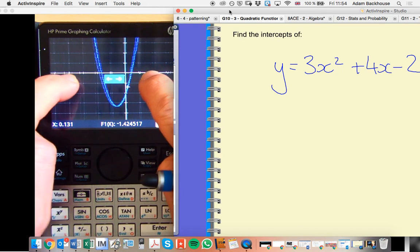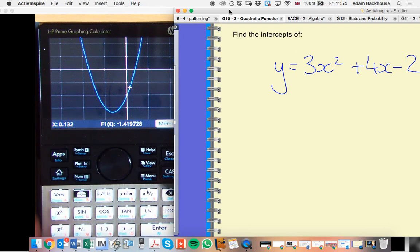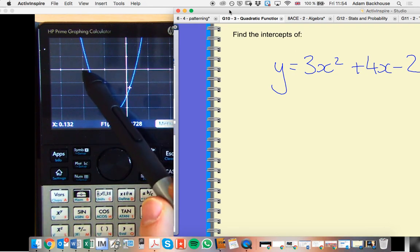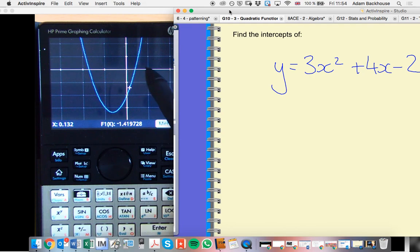I'm going to expect one x-intercept between negative 2 and negative 1. The other between 0 and positive 1. It looks a lot like my y-intercept is negative 2.